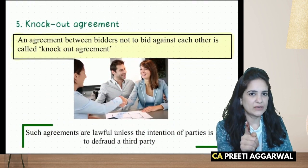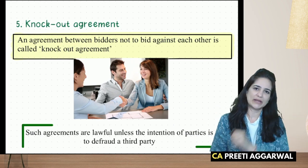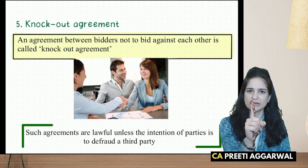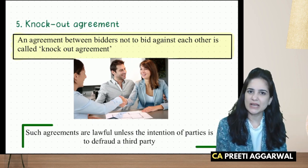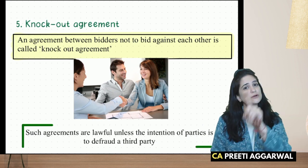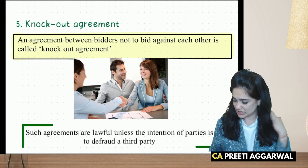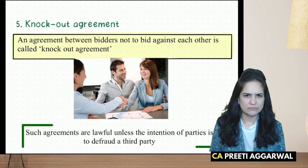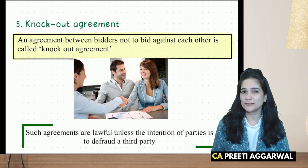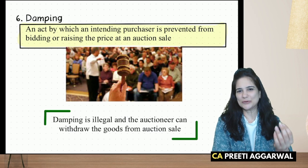Knockout agreement: if you and I are both interested in a product, rather than bidding against each other and driving up the price, we agree that only one of us will bid. If that person wins the goods, we divide them or sell them and split the proceeds proportionately. This is known as a knockout agreement. If it is in good faith, it is valid. But if the intention is to defraud other bidders, it is void. An agreement between bidders not to bid against each other is a knockout agreement — lawful unless the intention is to defraud the other party.